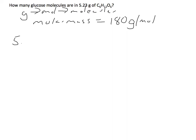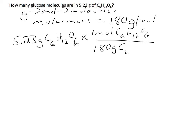we have 5.23 grams of C6H12O6, and we multiply that by the molecular weight to go from grams to moles, C6H12O6 divided by 180 grams of C6H12O6. Our grams are going to cancel.